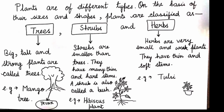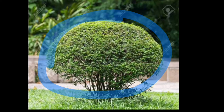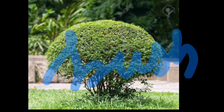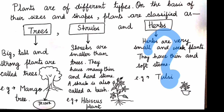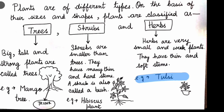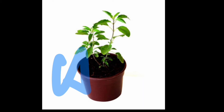Here you can see a picture of a shrub. Because of its formation, it is known as a bush, as it is almost looking like a bush. Herbs are very small and weak plants with thin and soft stems. For example, tulsi, which we all have in our home — this is a tulsi plant.